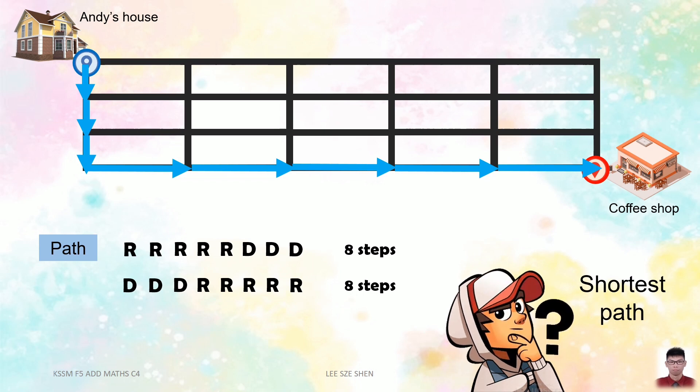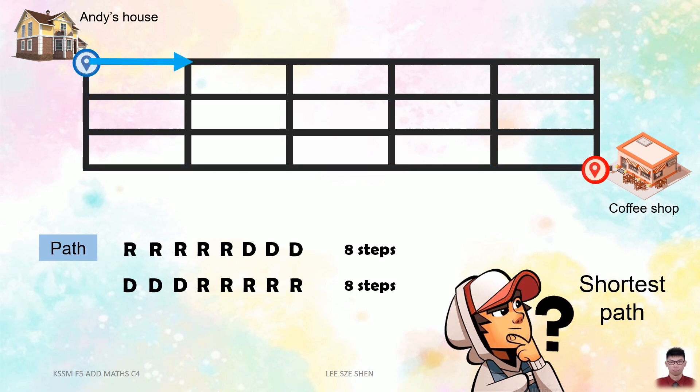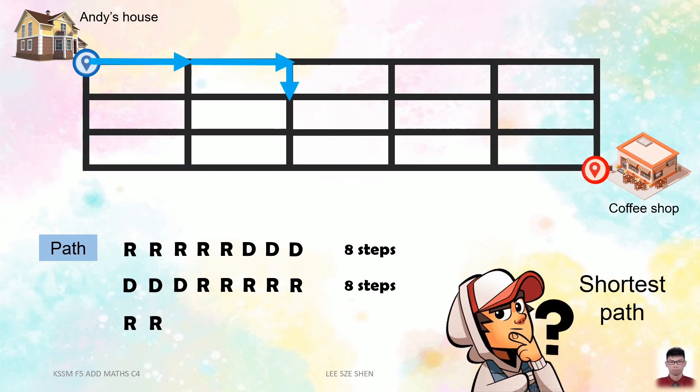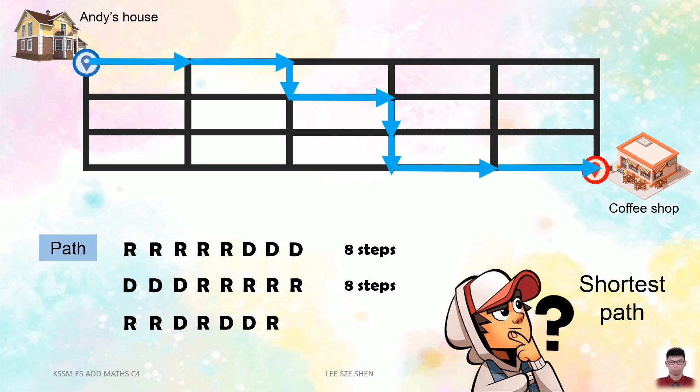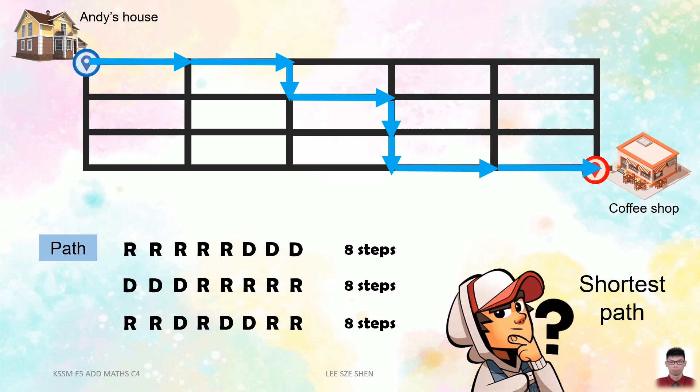Is it only these two paths that are the shortest? Let's look at this: right, right, down, right, down, down, right, right, right, which actually takes also 8 steps. So it seems like there are a lot more paths with the shortest steps. There are 8 steps.